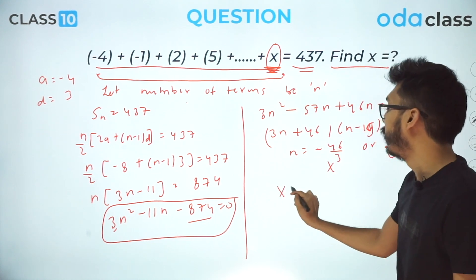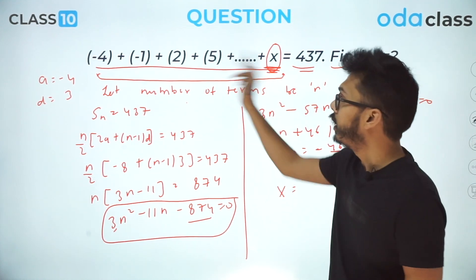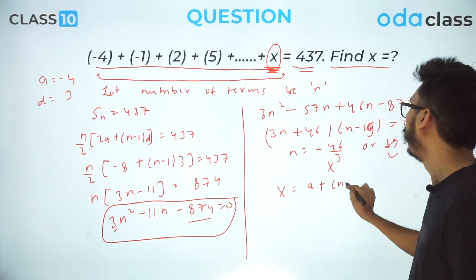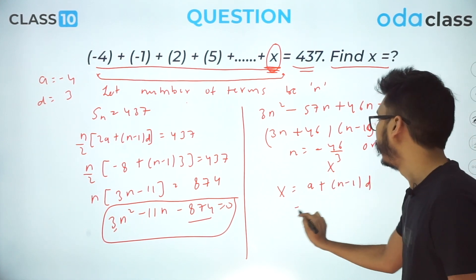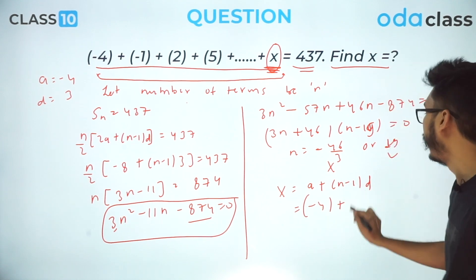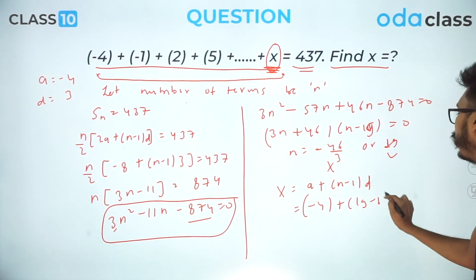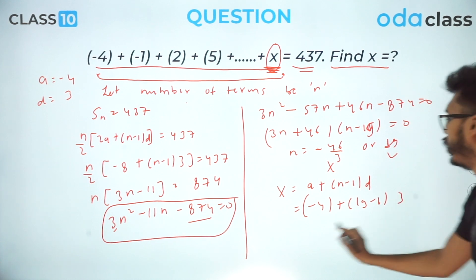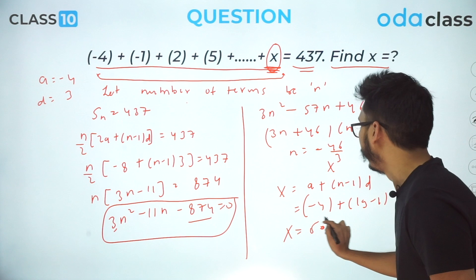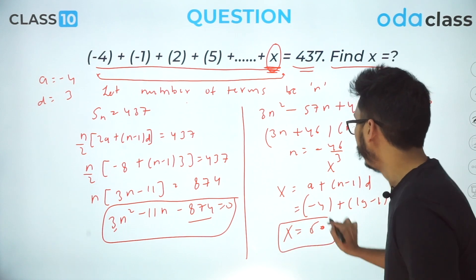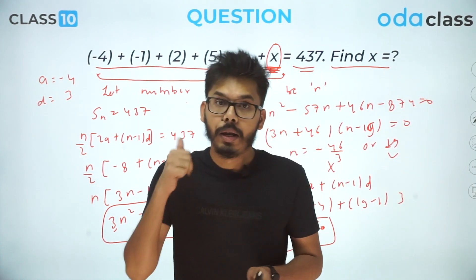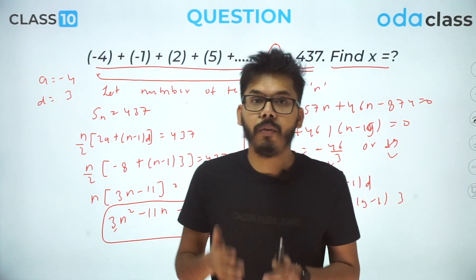Now that we know n = 19, we find x as the 19th term of the AP using Tn = a + (n−1)d. So x = −4 + (19−1) × 3 = −4 + 54 = 50. Therefore x = 50. This was the solution to the first problem, which involved both finding the number of terms and using the sum formula.